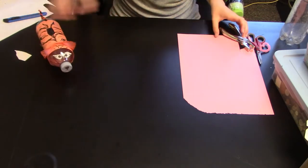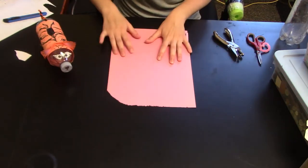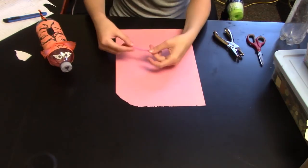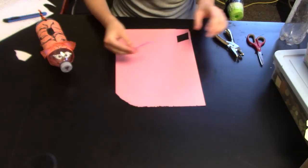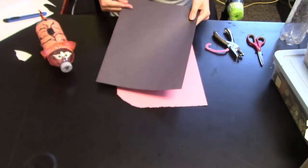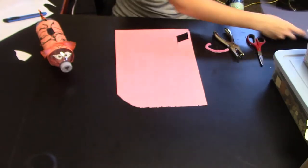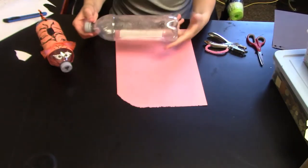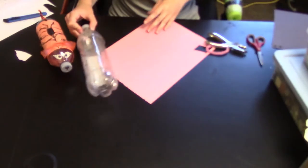We will be making a pig, so we'll need some pink construction paper, a little bit of pink pipe cleaner for the tail, some black construction paper for the eyes, and of course our plastic bottle. First thing you need to do is cut out some paper.